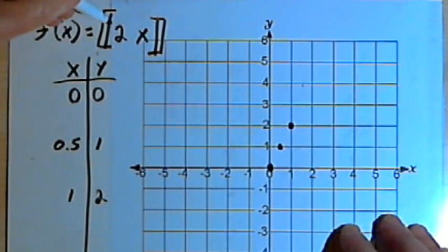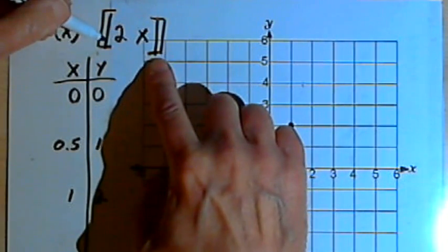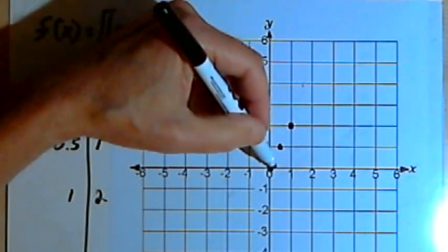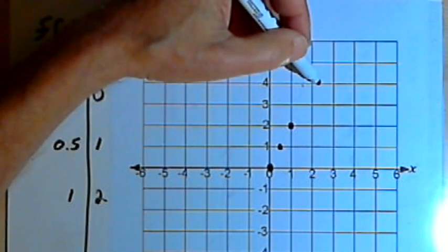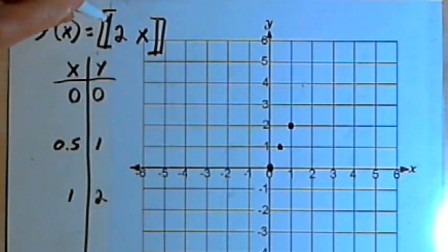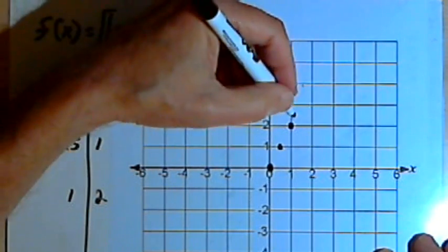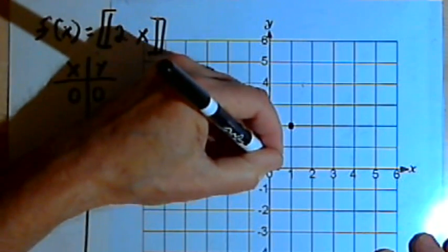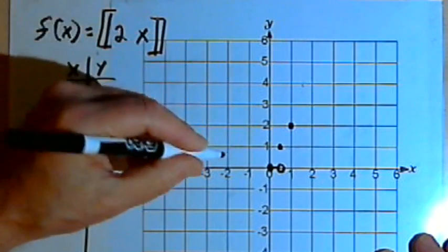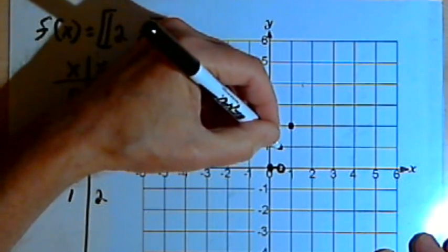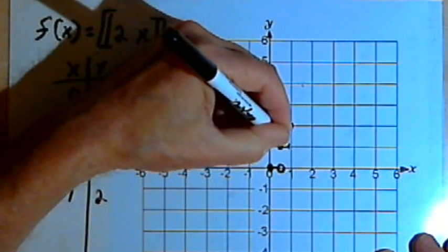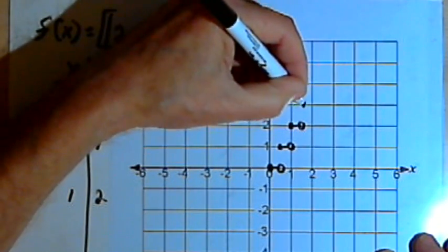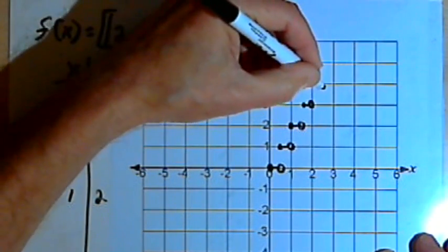This makes sense, I guess, because if we took away the greatest integer notation, then what I would have is f equals 2x. I would have a slope of 2, which is what I've got here. So knowing that this is a greatest integer function, I can take the points I've got so far and draw the steps in. I'll go from 0 up to, but not including 1 half. I'll go from 1 half up to, but not including 1. From 1 up to, but not including 1 and a half. From 1 and a half up to, but not including 2. And so on.